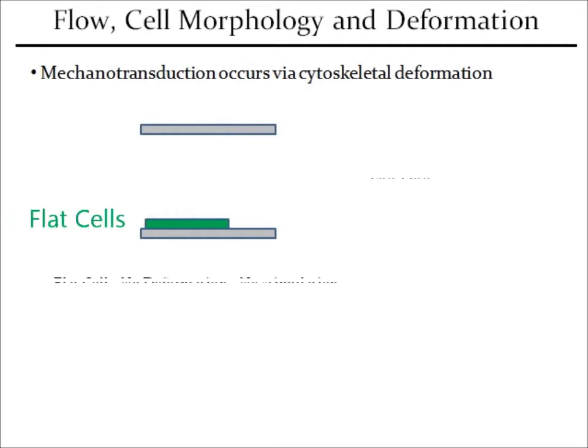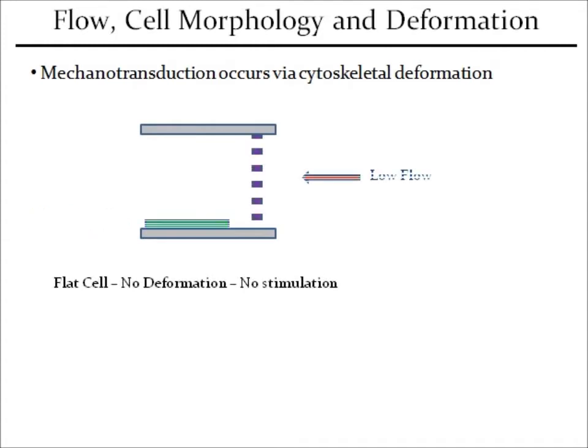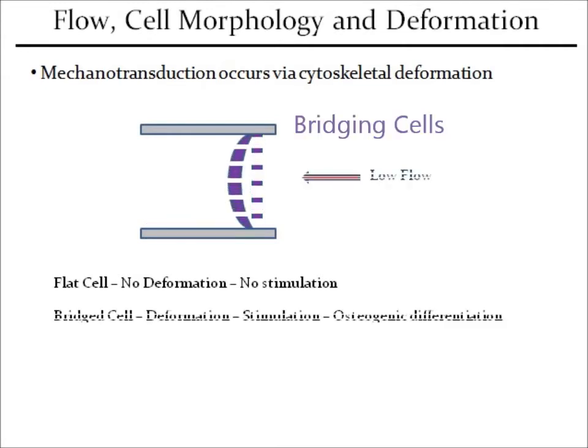At low flow rates, flat cells will experience limited deformation and hence limited mechanical stimulation, whilst the bridging cells, behaving like a sail in the wind, experience much larger deformations and therefore greater mechanical stimulation.